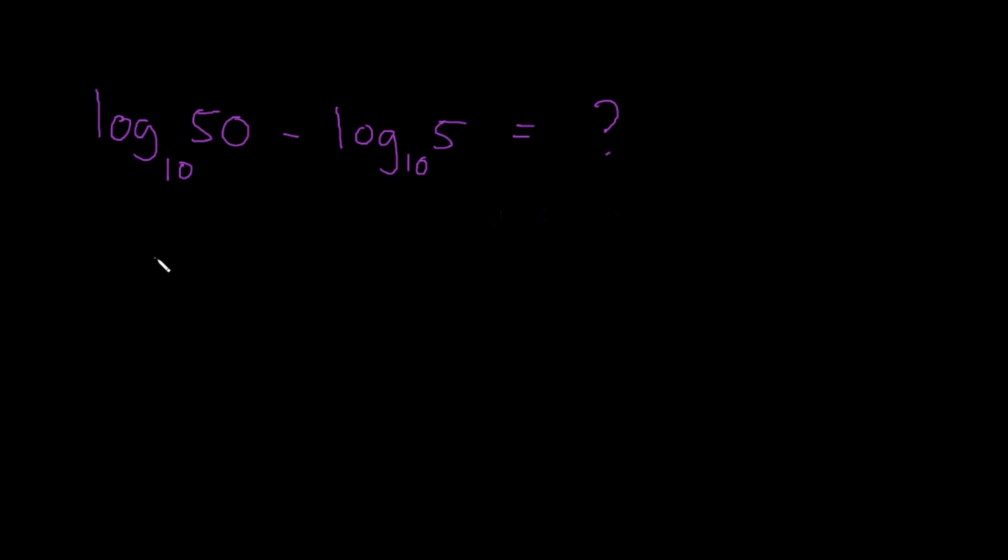So we can make use of the laws that we just learned. This looks like the quotient rule. So we can write this as one logarithm: log base 10 of 50 over 5, which is simply log base 10 of 10. And we know that in order to get 10, we simply need to raise 10 to 1, right? And so our answer for this would be 1.